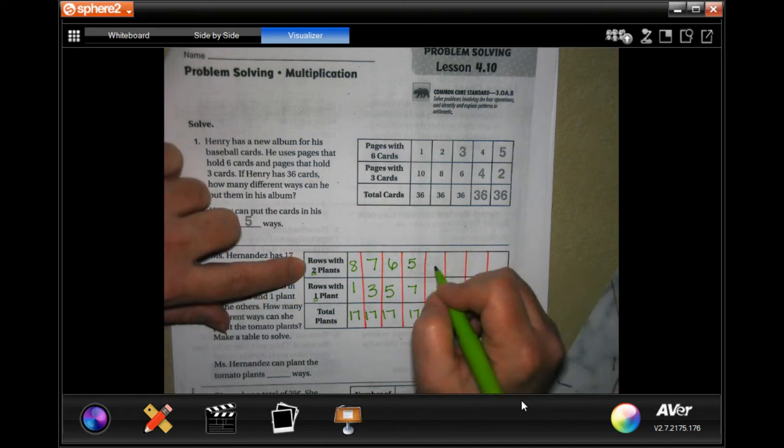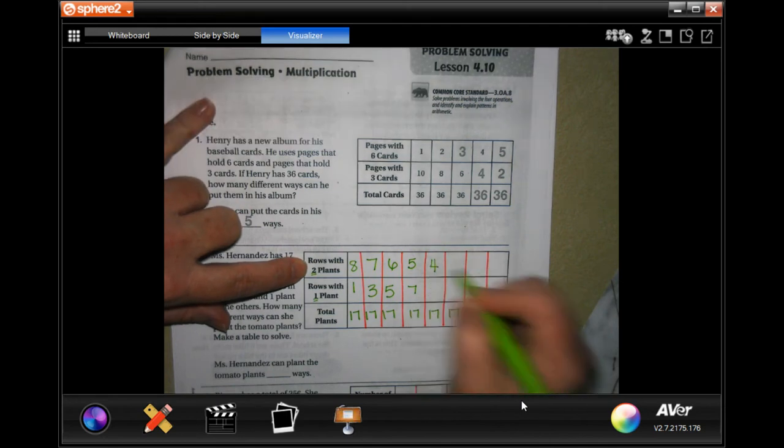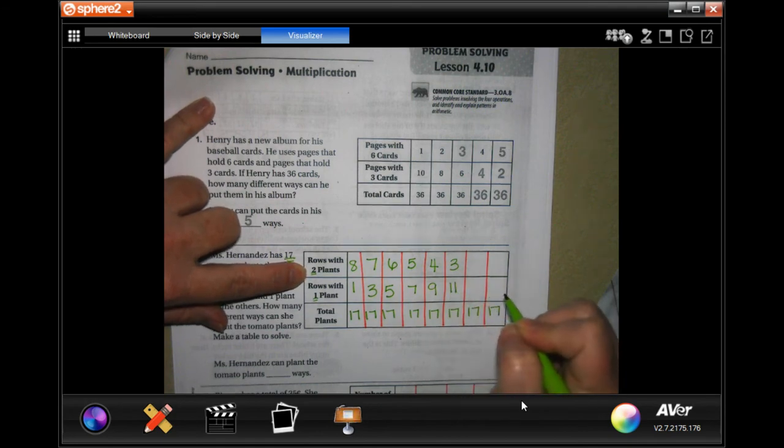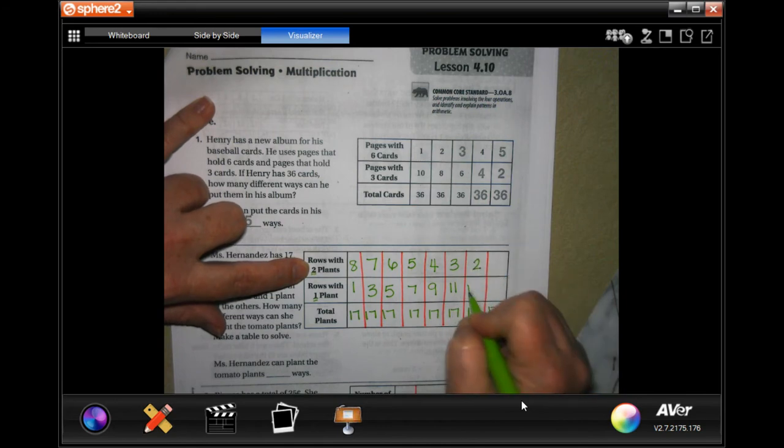I can do two times four is eight plus nine is 17. I can do two times three is six plus 11 is 17. Two times two is four plus 13. And two times one is two plus 15 is 17.